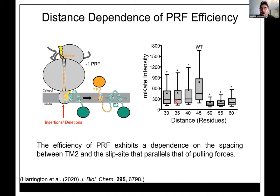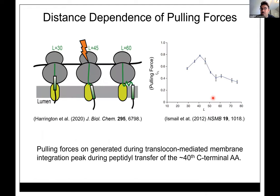In flow cytometry, with the wild-type 45 amino acid linker for Sindbis virus, if you reduce linker length to 40, 35, or 30, you see a reduction in the frameshift product. It also goes down if you increase the linker length. The pattern in these median lines is remarkably similar to the force profiles seen with arrest peptides, even though it's a completely different assay and context.